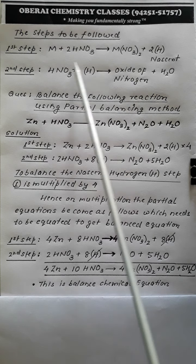Suppose a question is given: balance the following equation using the partial balancing method. The equation given is zinc reacting with nitric acid to produce zinc nitrate, N2O (nitrous oxide), and water. This skeletal reaction needs to be balanced using the partial balancing method.